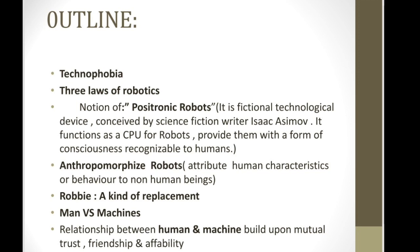The third one is the notion of the positronic robot brain - basically a fictional technological device. It's something we see in sci-fi fiction and it was originated by Isaac Asimov, who utilized it in his fictional works. Just as in a human system the CPU or central processing unit works as our brain, in a robot the central processing unit is the positronic robot brain. Its benefit is that it provides them a sort of consciousness - an awareness that allows them to recognize human beings.